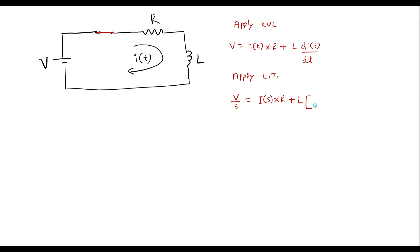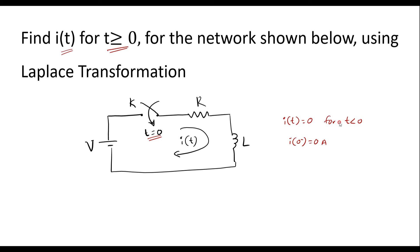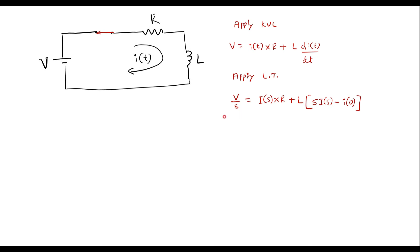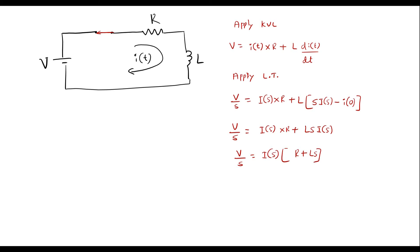L is constant. Taking the Laplace transform of the differentiation term, and since I of 0 minus equals 0, that term vanishes. So I can write V by S is equal to I of S into R plus L·s. Therefore V by S is equal to I of S times the quantity R plus L·s.